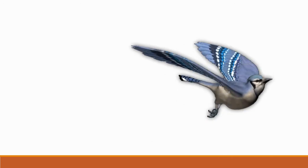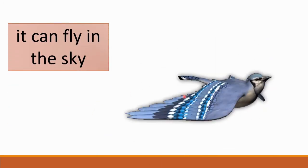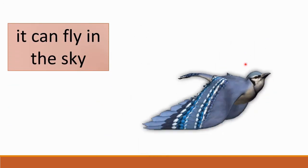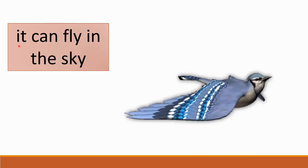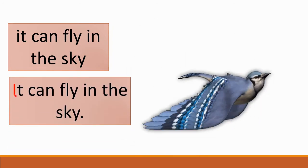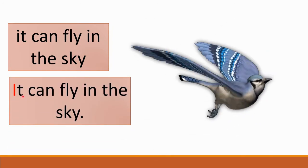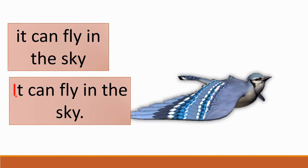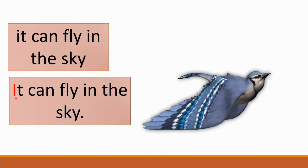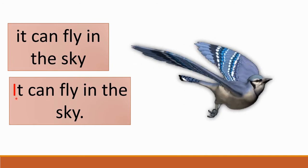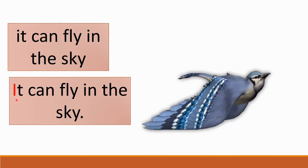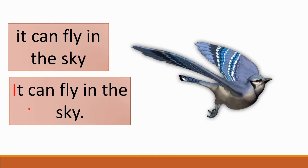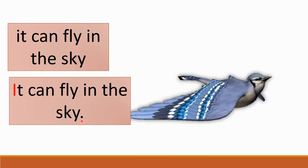'It can fly in the sky.' In this sentence, the initial letter of the first word in the sentence is I, and it is marked as capital. And it ends with a full stop.